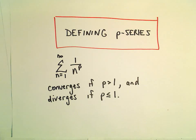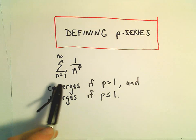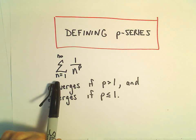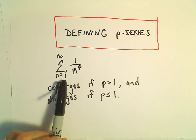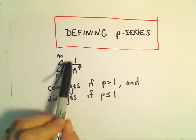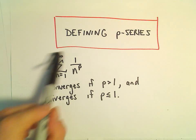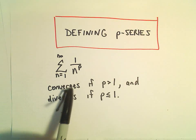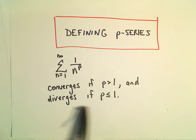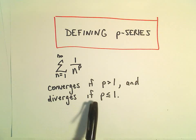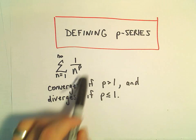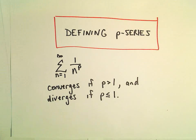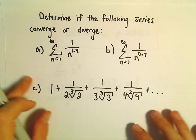Here we're going to look at a few quick examples related to p-series. A p-series is a series of the form — from 1 to infinity, though it doesn't have to start at 1 — of 1 over n to the p. This series converges if p is greater than 1 and diverges if p is less than or equal to 1. You justify this using the integral test.